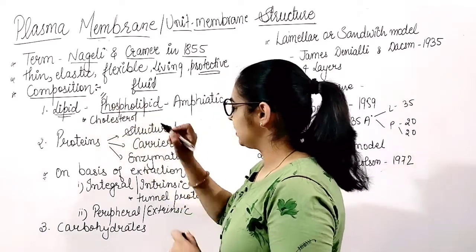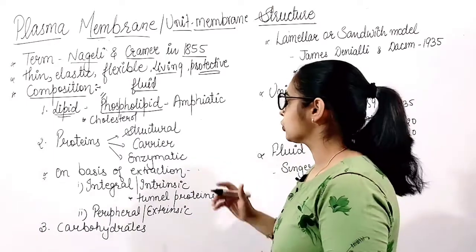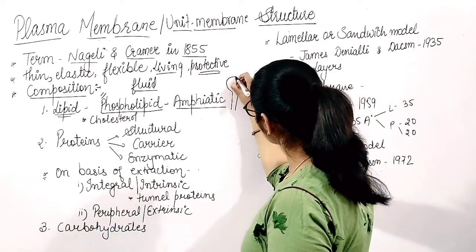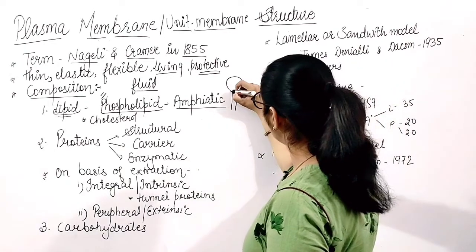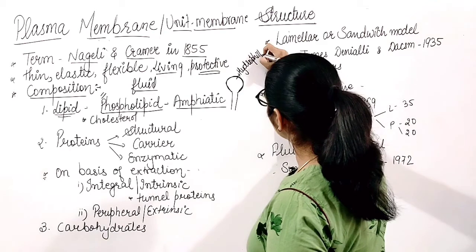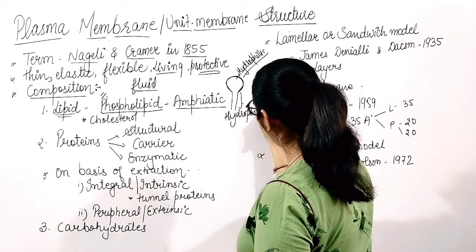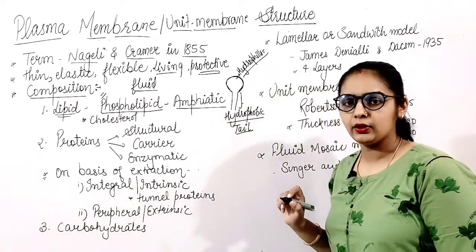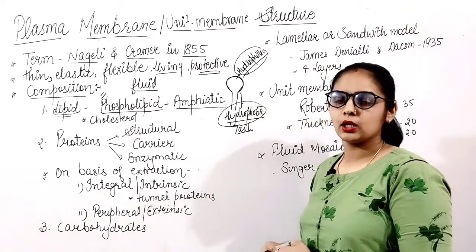The most important lipids in the plasma membrane are phospholipids. Phospholipids are amphipathic, meaning they have two parts: a hydrophilic head, which is water-loving, and a hydrophobic tail, which is water-hating.